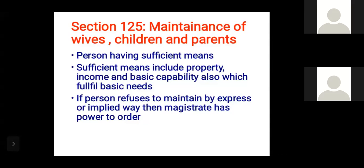For example, suppose a person does not receive a salary and his wife claims maintenance from him. Even if he doesn't earn a salary, if he has sufficient means including property and basic capability to fulfill his wife's basic needs, he is still obligated to pay maintenance. So it is not only income but also property and basic capability that are included in determining maintenance.